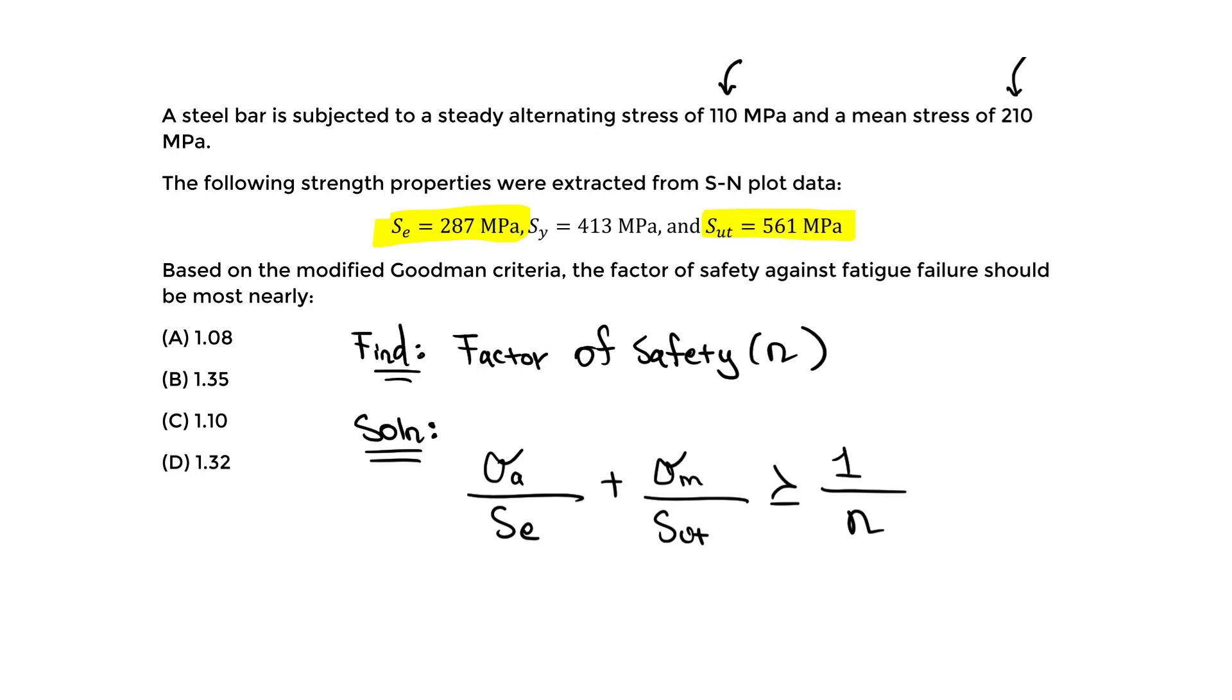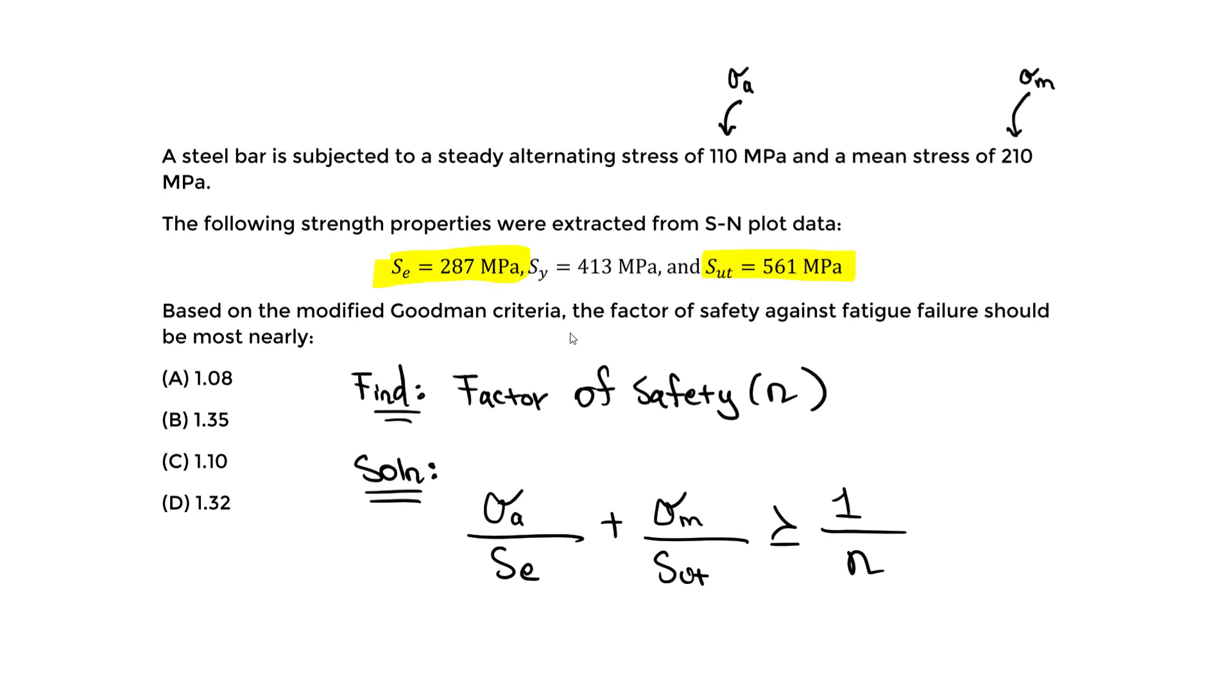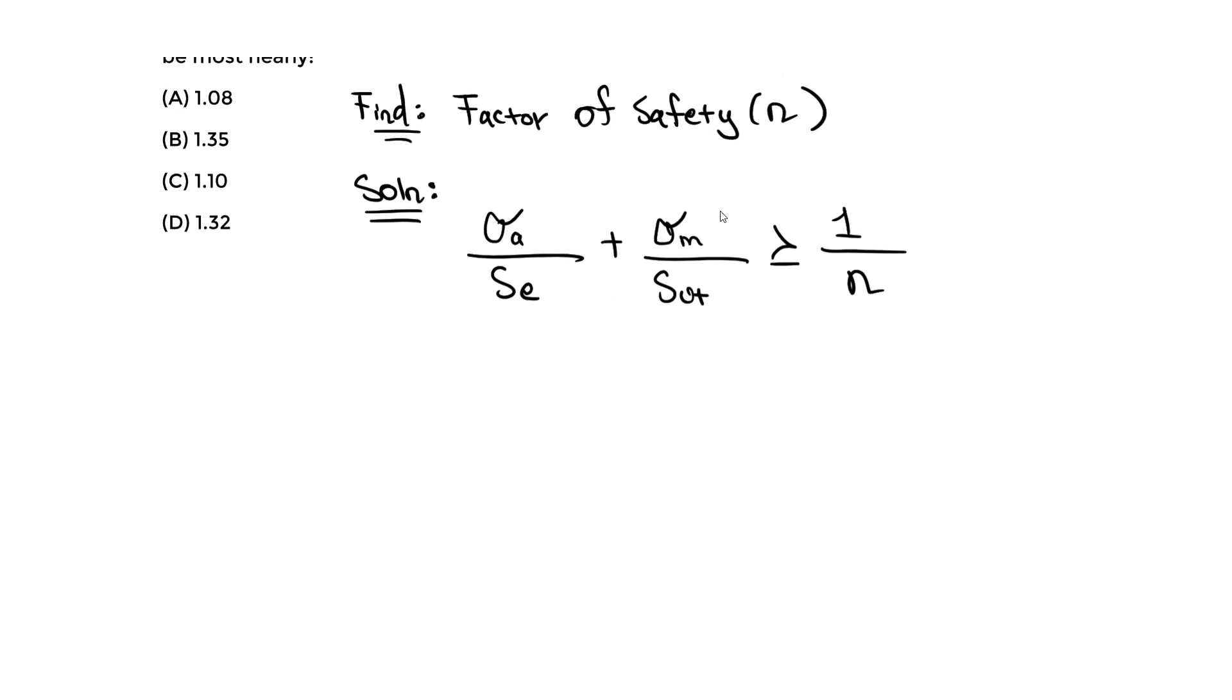Let me just plug everything in. We have 110 for the alternating divided by the SE, which is 287. The sigma_m is the mean, which is 210, and we take 561 on the bottom. This is greater than or equal to 1 over N. Then you just solve for N, and we should get 1.32. So we need this factor of safety when we actually use this material for design. It should be D.